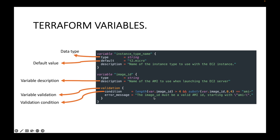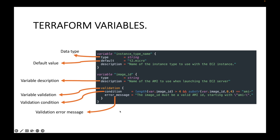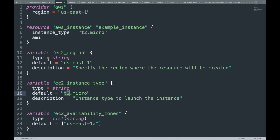If the validation condition does not match, Terraform will throw an error message saying the image ID is not valid. This way, if a user passes an incorrect AMI value, we can validate it upfront rather than waiting for terraform plan to fail. These are some of the arguments you can pass with your Terraform variable declarations. In the next session we will look at how to call these variables within our resource block and provider block.